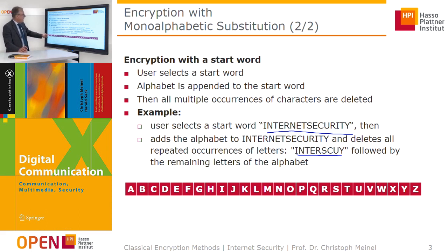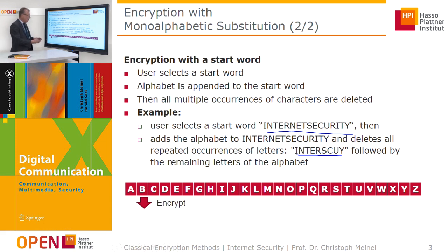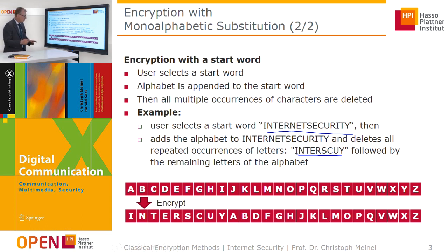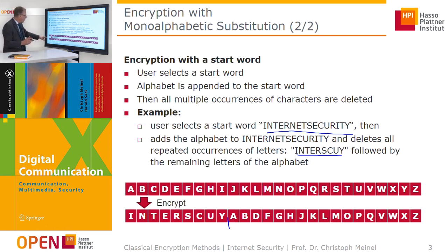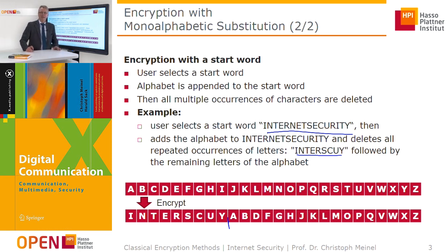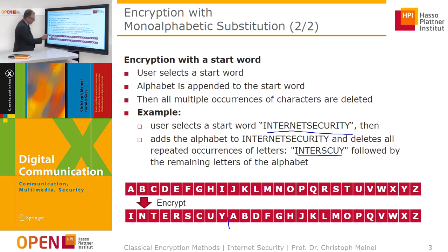Then we append the remaining letters of the alphabet. So here we have our alphabet A, B, C, D appended afterward. All letters that occur in the start word have to be deleted from the appended alphabet to ensure a unique replacement. So for example, B is replaced by N, F is replaced by S, K is replaced by B.